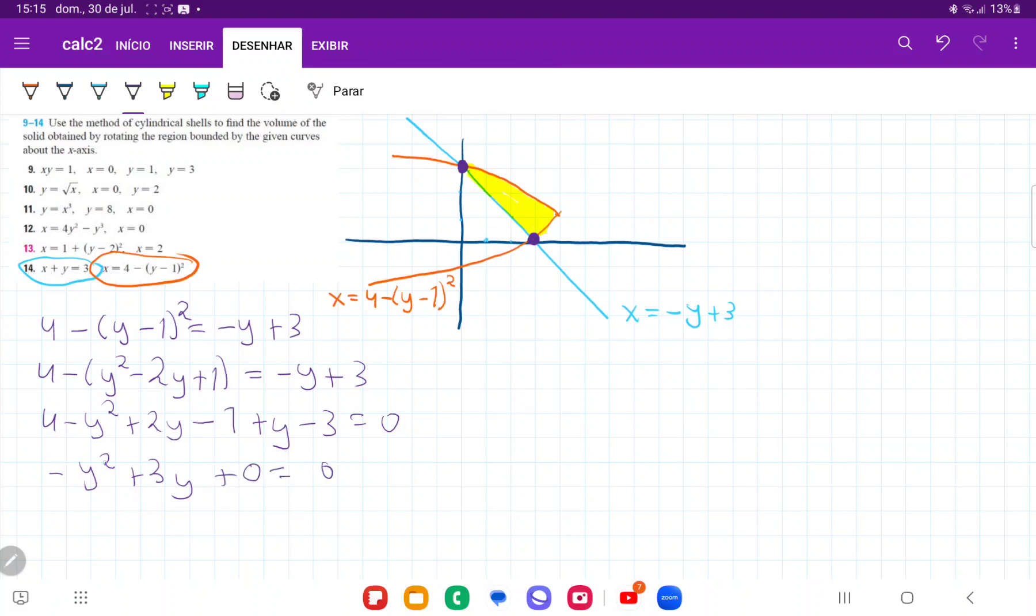And now I'm just going to factor out a y. So I have y times minus y plus 3 is equal to 0. Therefore, we can see that our answers are when y is equal to 0 and y is equal to 3.